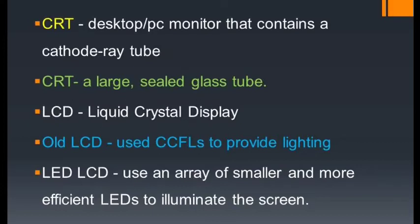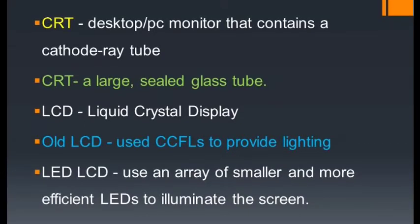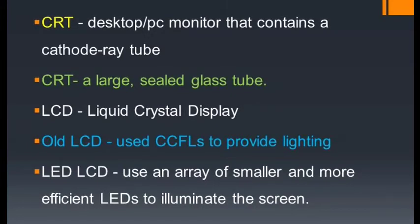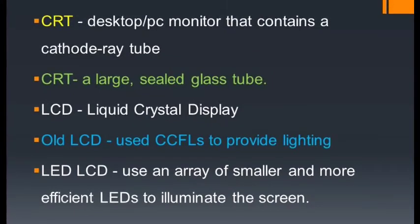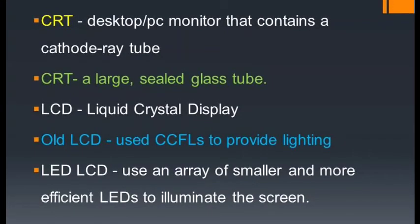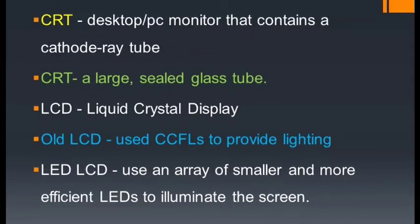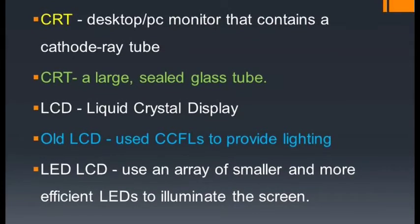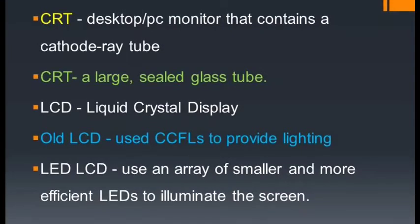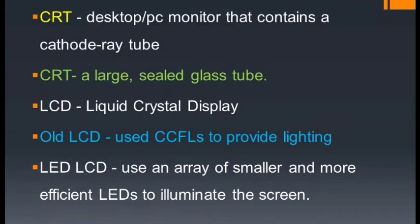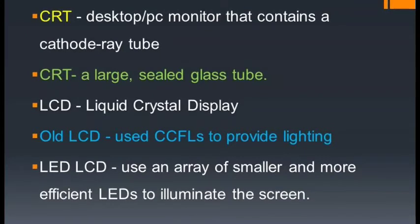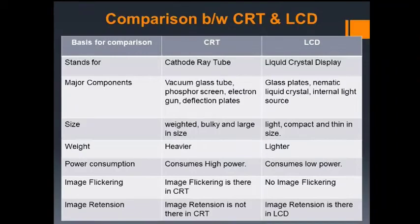LCD monitors produce sharp, flicker-free images. Older LCD monitors used cold cathode fluorescent lamps, or CCFLs, to provide lighting. The latest LED LCD monitors use an array of smaller and more efficient light emitting diodes to illuminate the screen. The main component of CRT is the vacuum tube, while in LCD the main component is the liquid crystal.